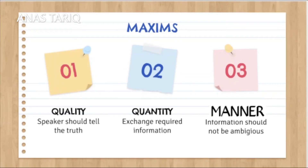For example, someone asks you: do you like my haircut? If you respond like yes, I like your haircut, then you follow the maxim of manner. But if you respond like: that haircut is interesting and makes people look good — here the information is made obscure and the maxim is not being followed.